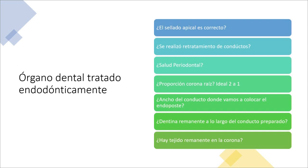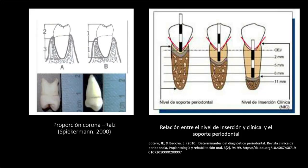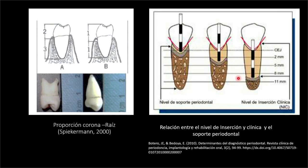En la corona: ¿tengo tejido suficientemente sano? ¿O no hay nada en la corona? Nos encontramos con casos donde clínicamente parece haber salud periodontal y nos confiamos en que el órgano estará bien. Sin embargo, al sondear podemos observar bolsas muy profundas. No es lo mismo trabajar con un soporte periodontal ideal que con uno deficiente, porque las fuerzas en la corona son mucho mayores y el órgano dental va a tender a fracturarse.